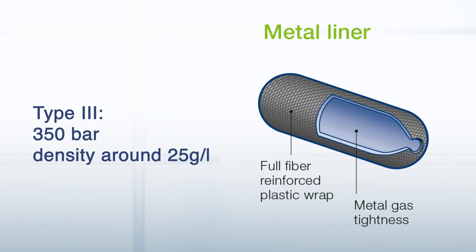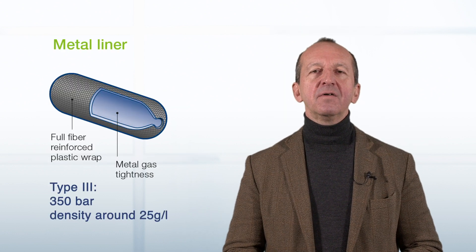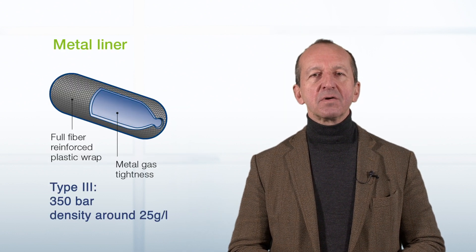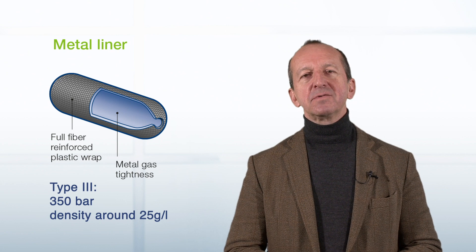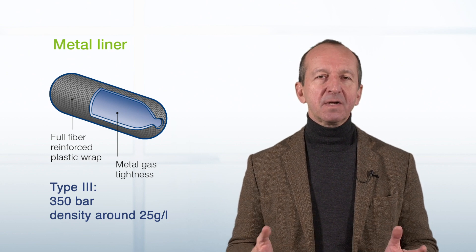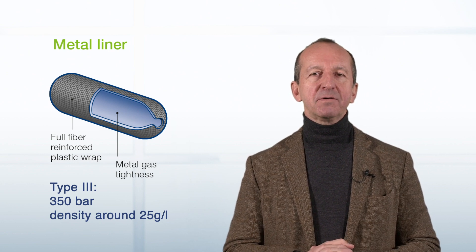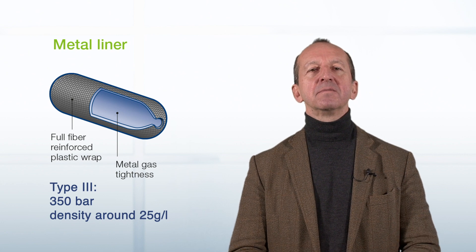Type 3 is where the interesting tanks for hydrogen begin. The inner liner, for instance, is the tank bubble inside, which is made of aluminum. Such tanks are often found in vehicles and can store hydrogen at pressures up to 350 bar. The typical density in a Type 3 hydrogen tank is 25 grams per liter.